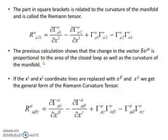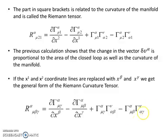In flat spaces this is all zero, but not in curved space. If we replace the x1 and x2 coordinate lines with x beta and x gamma, we get the general formula of the Riemann curvature tensor for any manifold. This is of course assuming a torsion-free manifold — there would be an extra term if torsion were involved — but we are assuming a torsion-free manifold throughout this entire derivation.